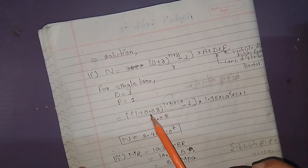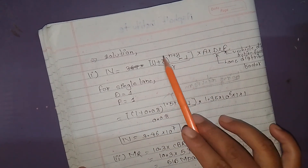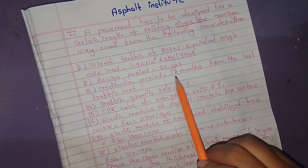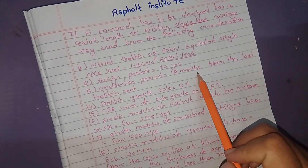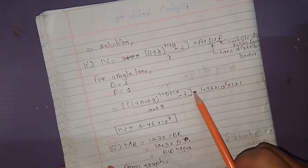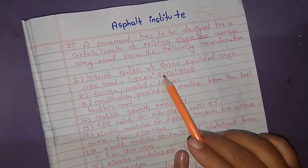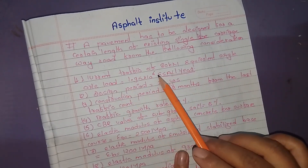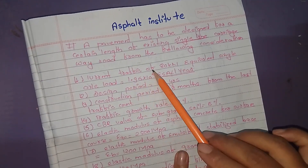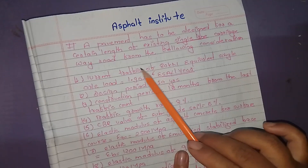The growth rate r is 0.08. The design period n is 10 years, and the construction period y is 1.5 years. So the exponent becomes 1.5 + 10 − 1. The equivalent single axle load is 1.95 × 10^6 ESAL per year.